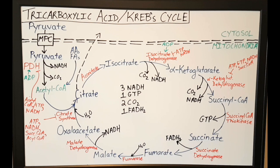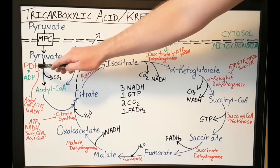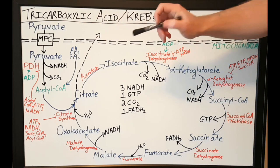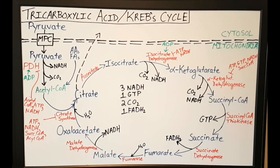The next thing that happens is that pyruvate undergoes a decarboxylation reaction via the enzyme pyruvate dehydrogenase, or PDH. PDH is a large protein complex that decarboxylates pyruvate, giving you a CO2, but it also produces an NADH from the reaction.